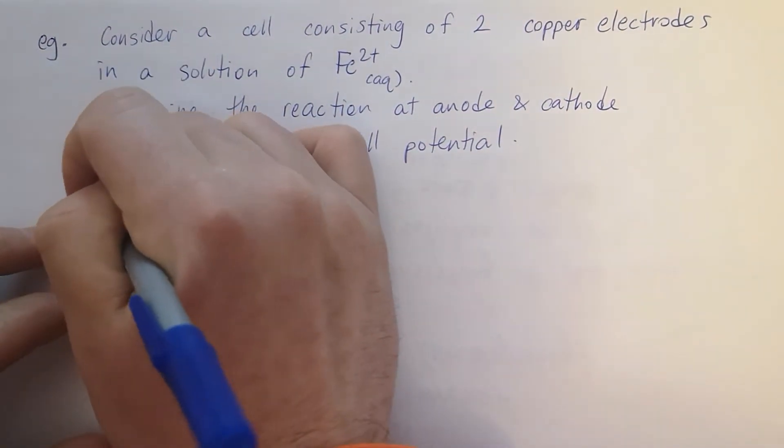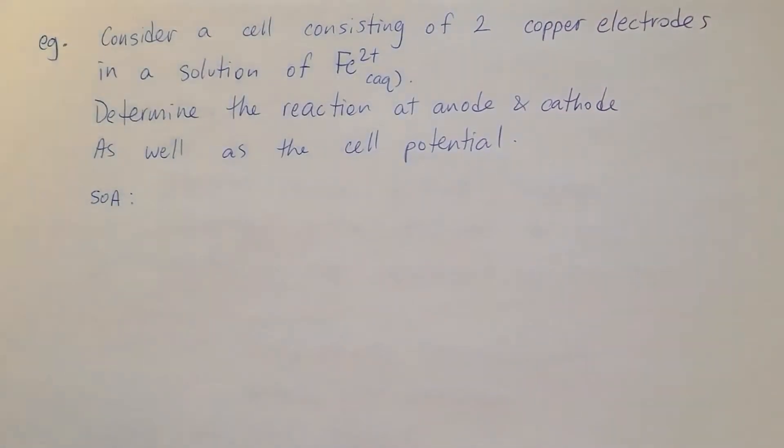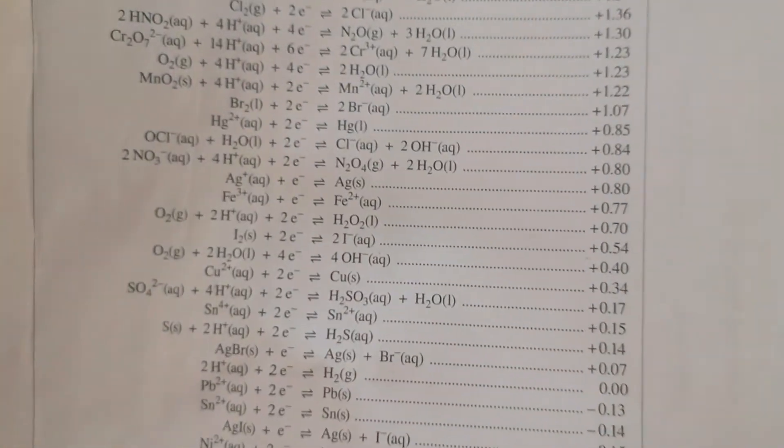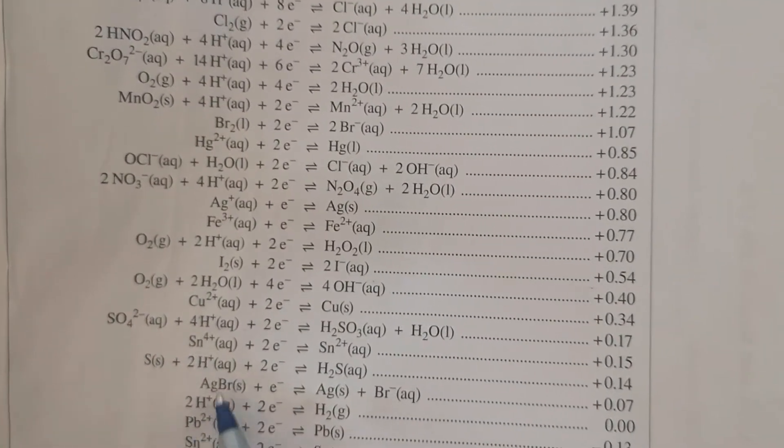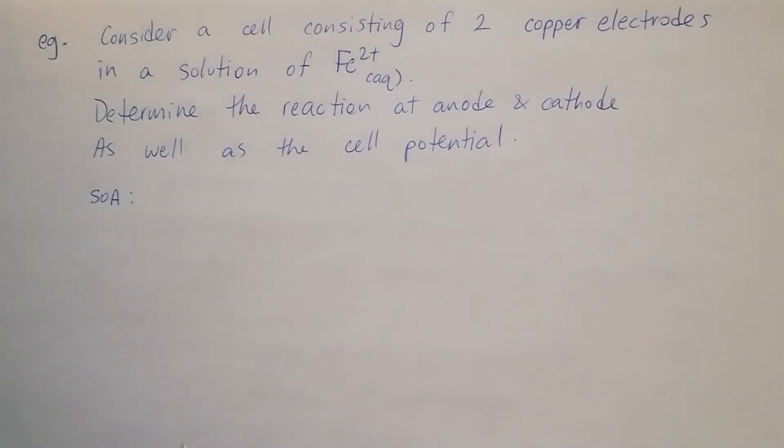This will be a different looking cell because it's going to have a negative cell potential, but the analysis is the same. We start by finding the SOA. All we got is copper, iron, and water. We don't have copper two ions, so these aren't standard half cells.